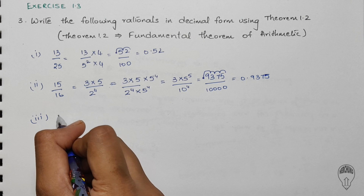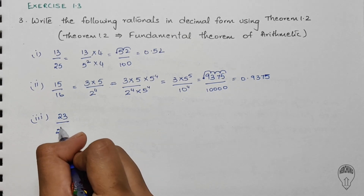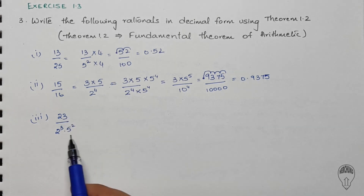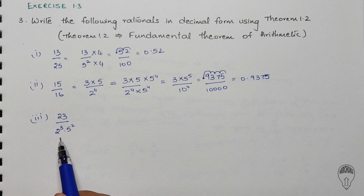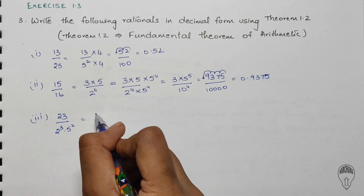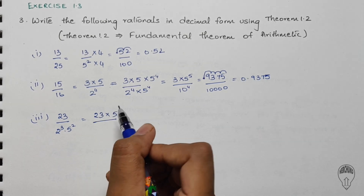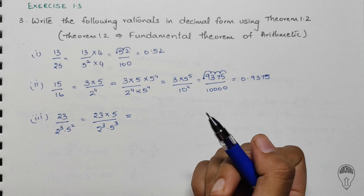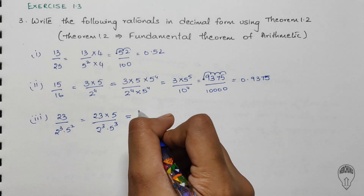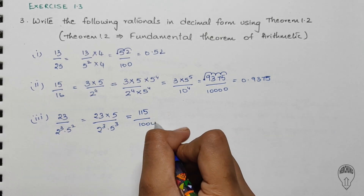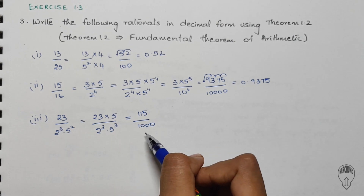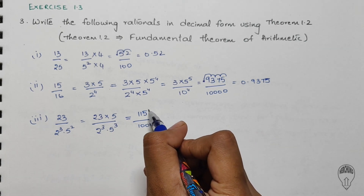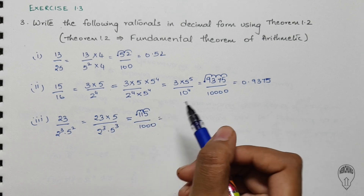For the third problem we have 23 divided by 2 cubed times 5 squared. 23 is a prime number, and the denominator is already written as a product of prime factors. We multiply by an additional 5 so that the denominator becomes 2 cubed times 5 cubed, which equals 1000. 23 times 5 equals 115, giving us 115 divided by 1000. Since we have three zeros in the denominator, we move the decimal three places to the left.